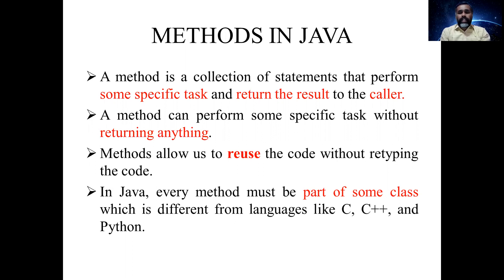A method is a collection of statements that perform some specific task and return the result to the caller. A method can also perform a task without returning anything. Methods allow us to reuse code without retyping it — once you define a function you can use it wherever you need, with no need to rewrite the code again and again. That is the advantage of methods.